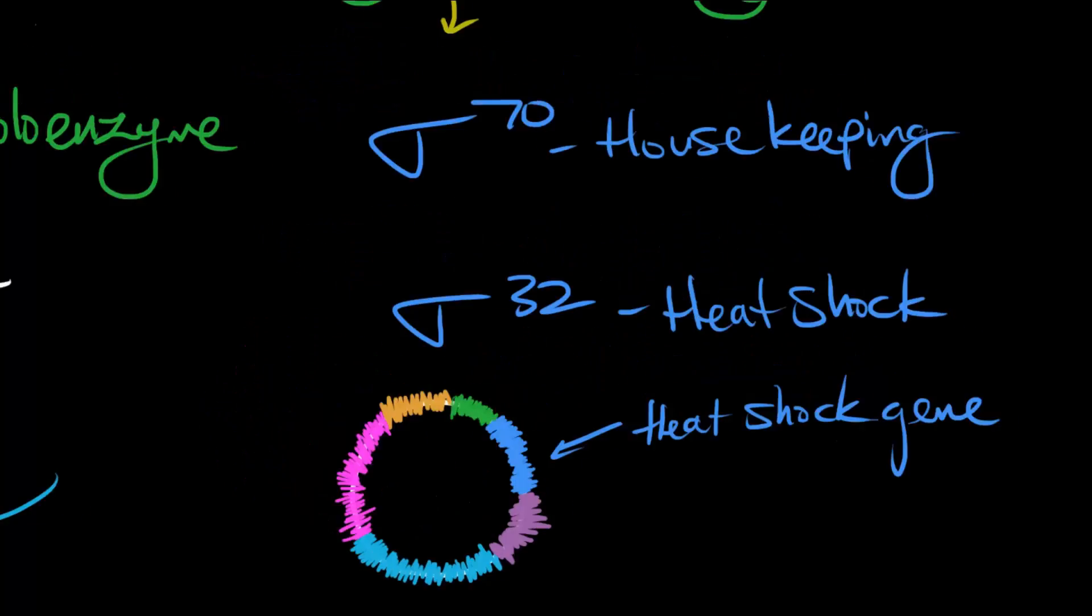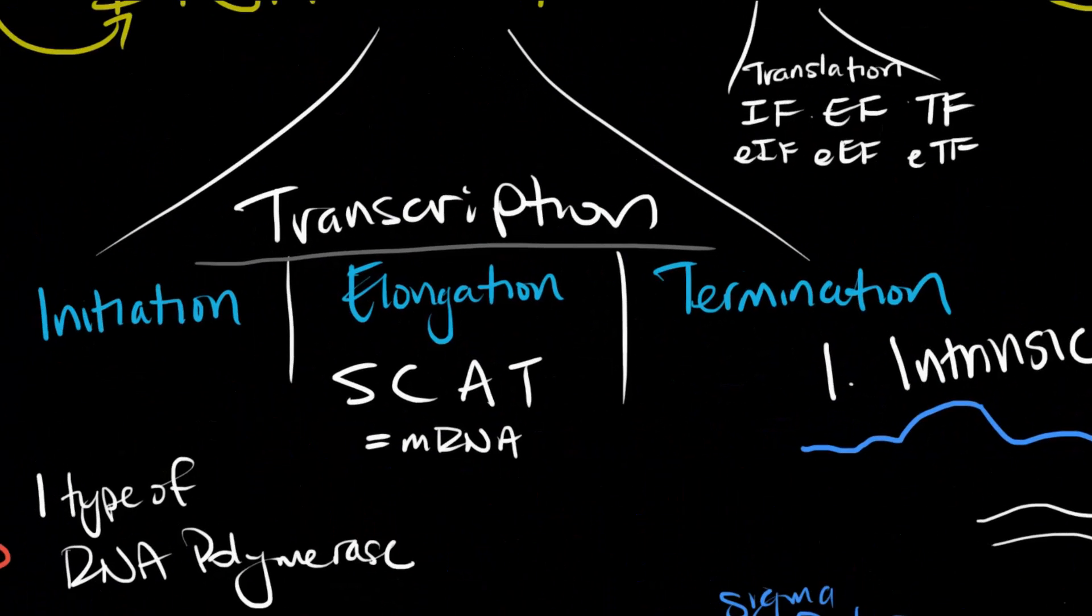Prokaryotic transcription doesn't have anything unique with elongation. Just know that RNA polymerase is reading the template strand to write RNA. Therefore, the RNA it's making is the same sequence as the sense, coding, and anti-template strands, just with the U's instead of the T's.